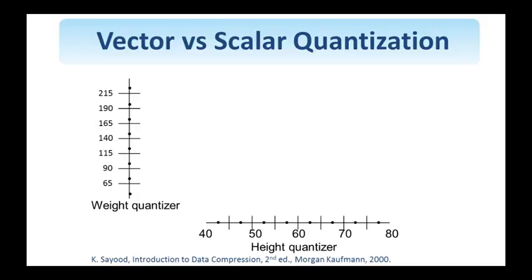Suppose we have 6 bits to represent each pair of values. We could use 3 bits to quantize the height and 3 bits to quantize the weight. So, the weight is divided into 8 equal intervals, each of width 25. And similarly, the height is divided into 8 equal intervals of width 5. When we look at the representation of height and weight separately, as is shown here, this approach seems to make perfect sense.